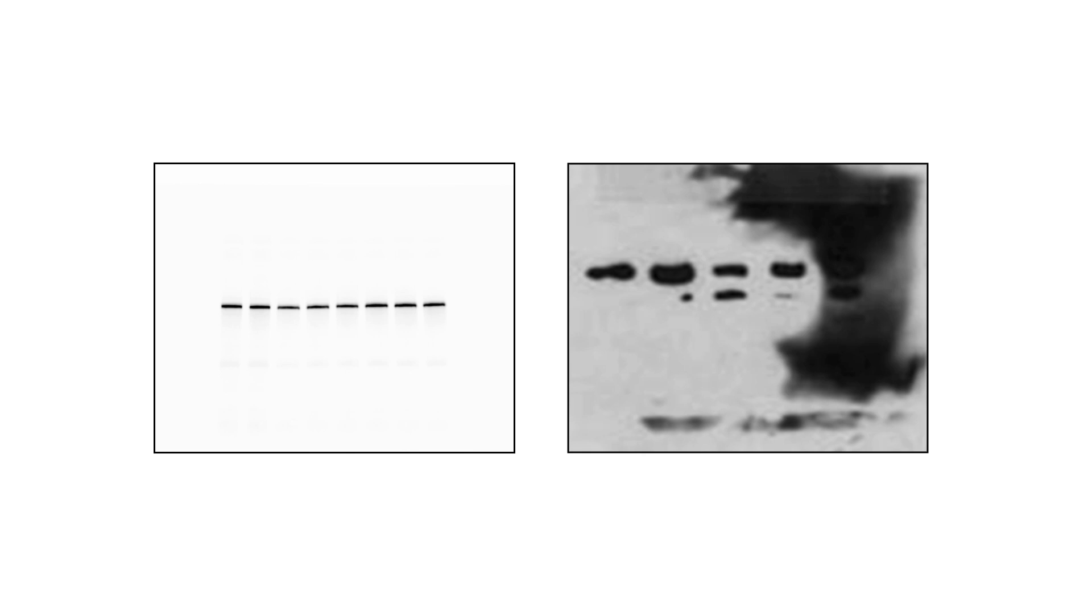When it comes to Western blotting, choosing the best membrane for your application can mean the difference between crystal clear bands and a blotchy mess. There are four key criteria you should consider when choosing a Western blotting membrane.